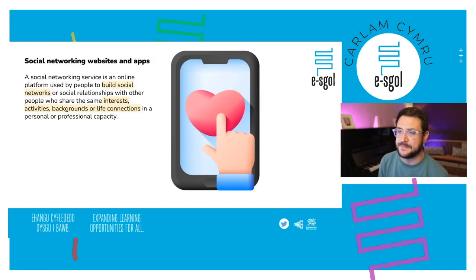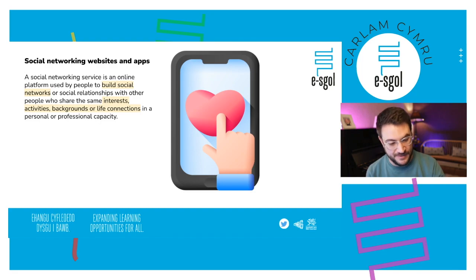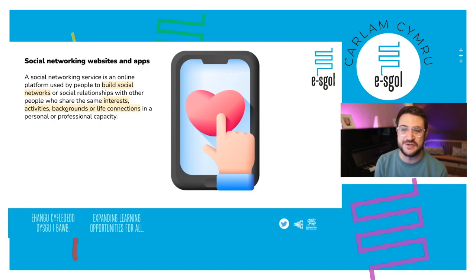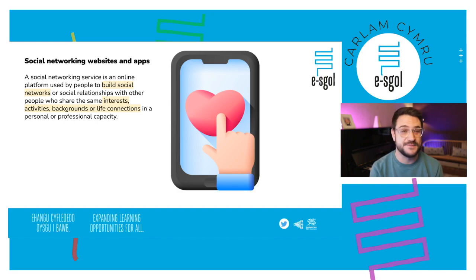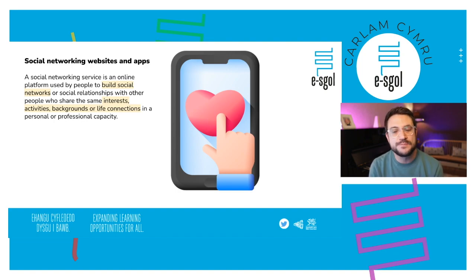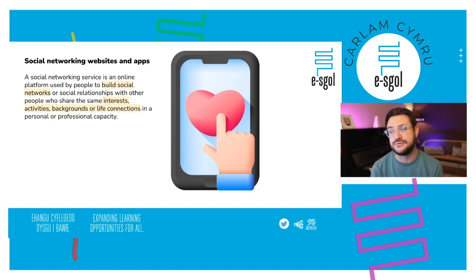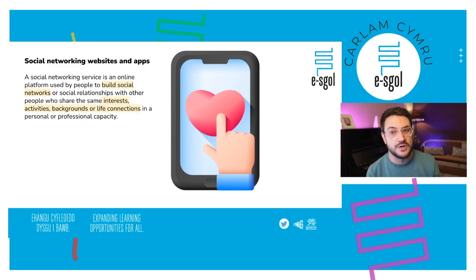Social networking websites and apps — you should be able to speak about this quite confidently, because who knows more about social networking websites and apps than teenagers? You are the experts. But make sure you can explain clearly the types of things these are used for in terms of communication, and don't get too specific. Don't get drawn into speaking about specific apps — make sure you can talk generally about all social media.